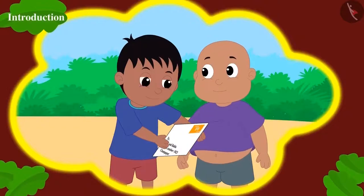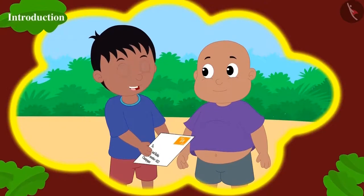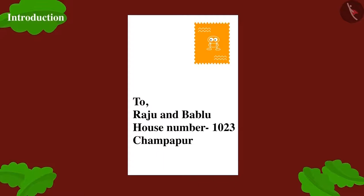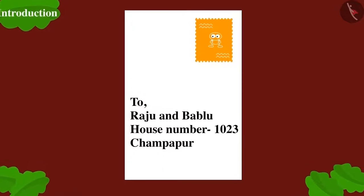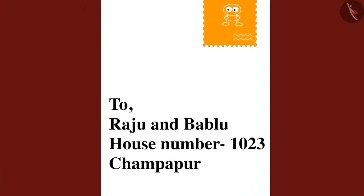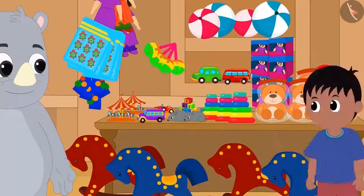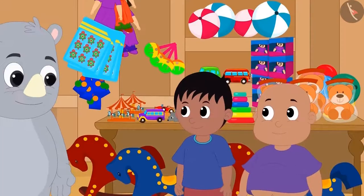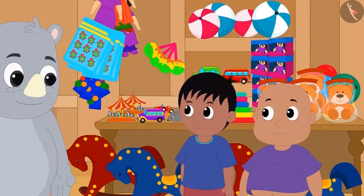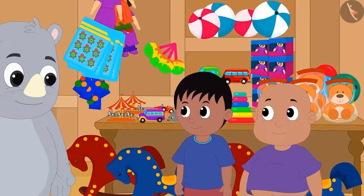Raju and Bablu have received a letter from Jeev today. The letter says that Jeev is coming to their house to celebrate Diwali along with his friends. Raju and Bablu have come to Gaggu's cracker shop to buy some firecrackers.